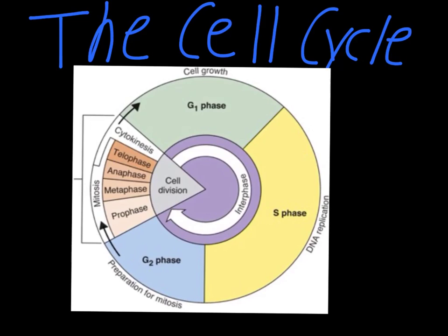For starters, the first part of this process is called interphase. You can see on the inside of the diagram, there's this arrow that goes around roughly three-quarters of the diagram that refers to this interphase section. Interphase includes G1, S, and G2. These are all part of interphase, which is what that inner portion of the diagram is showing.